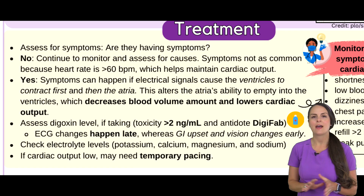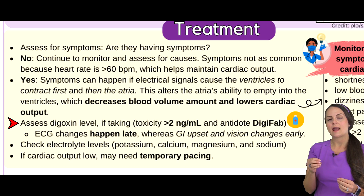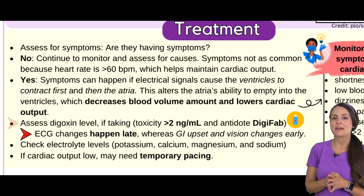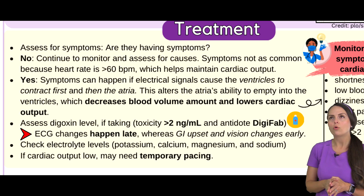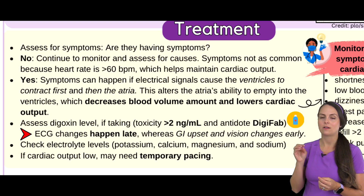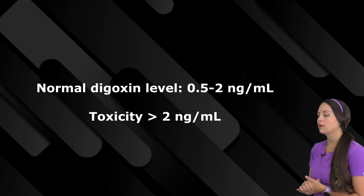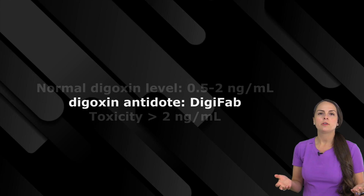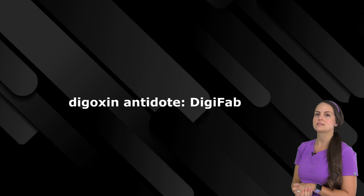Circling back to the causes, as a nurse we play a huge role in identifying toxicity issues like digoxin toxicity. You want to look for early signs and symptoms — patients may experience GI-related issues like nausea and vomiting. As it progresses, their vision can be affected with blurred vision or they start seeing yellowish-green halos. ECG changes happen a little bit later, so we want to identify it early. We'll also be looking at their lab work — a normal digoxin level is anywhere between 0.5 to 2 nanograms per milliliter. Any level greater than 2 nanograms per milliliter puts us into toxicity territory. The antidote for digoxin is Digifab — easy to remember because it starts with 'digi,' similar to digoxin.